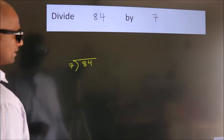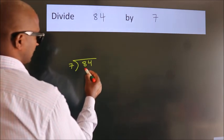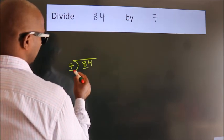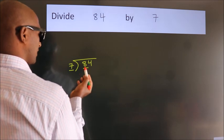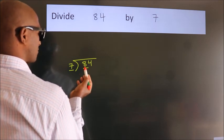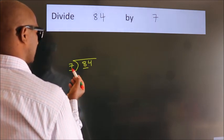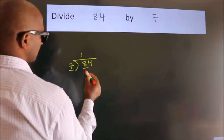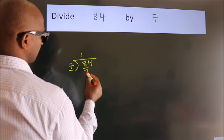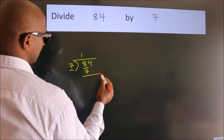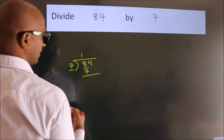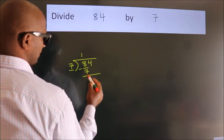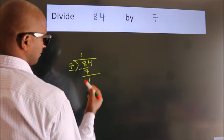Next, here we have 8 and here 7. A number close to 8 in the 7 times table is 7 once 7. Now we should subtract. We get 1.